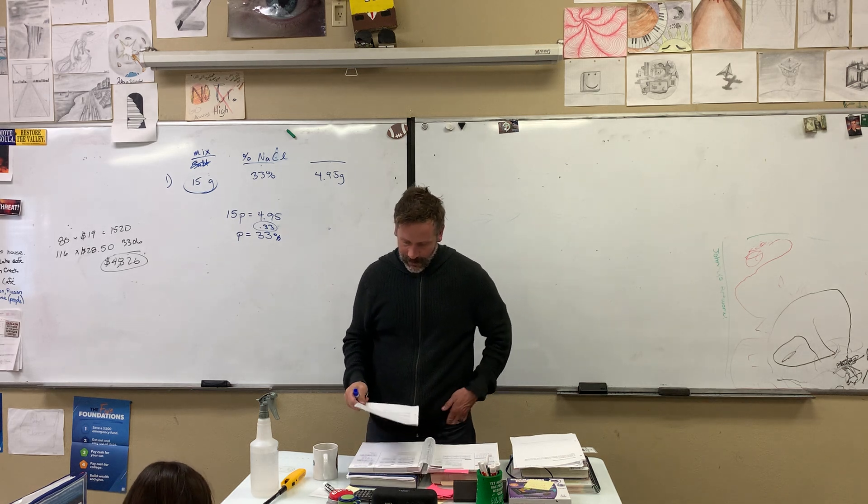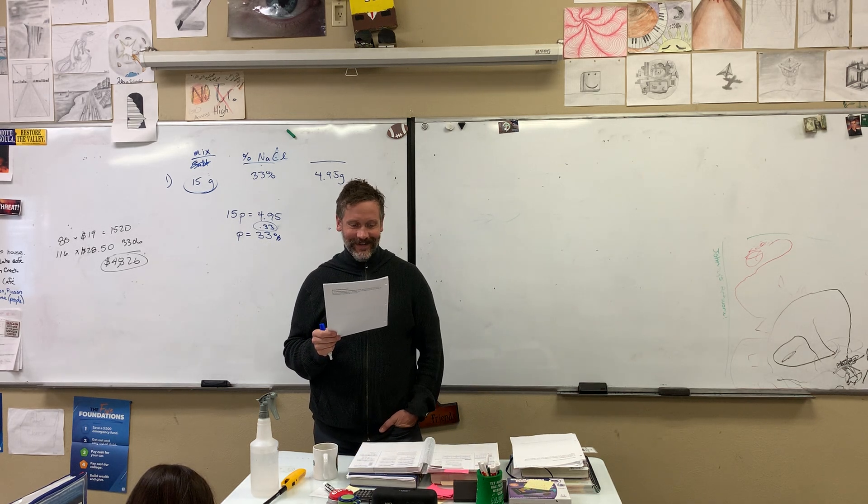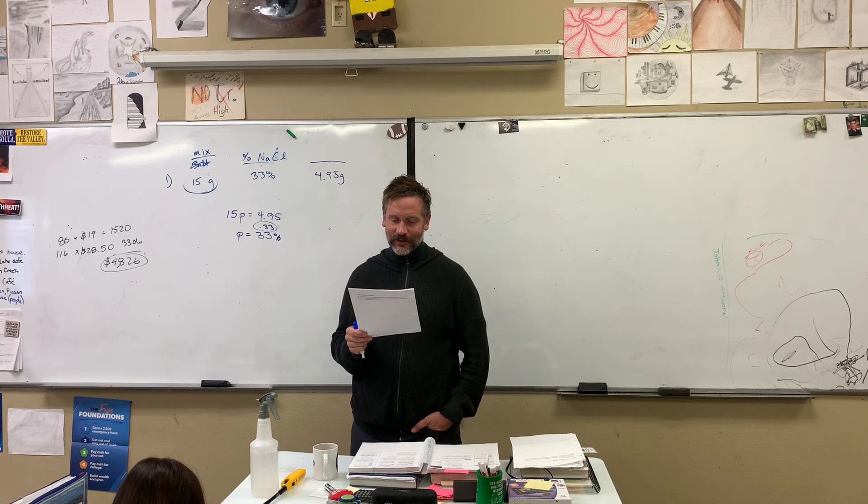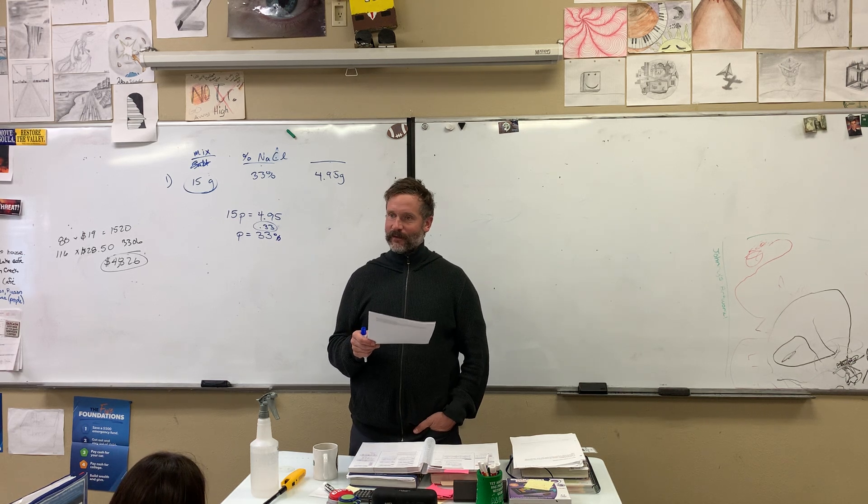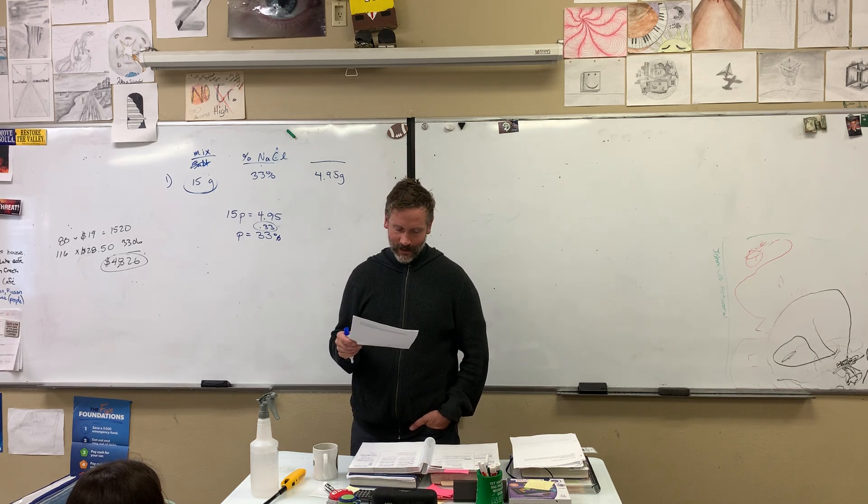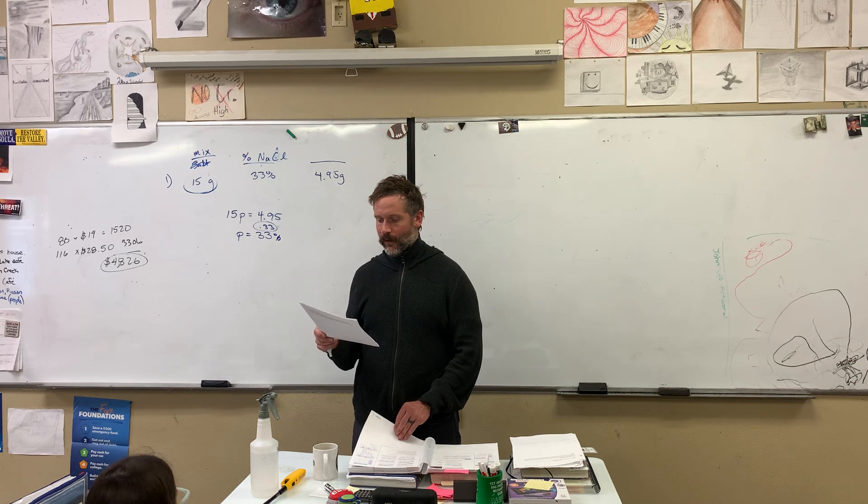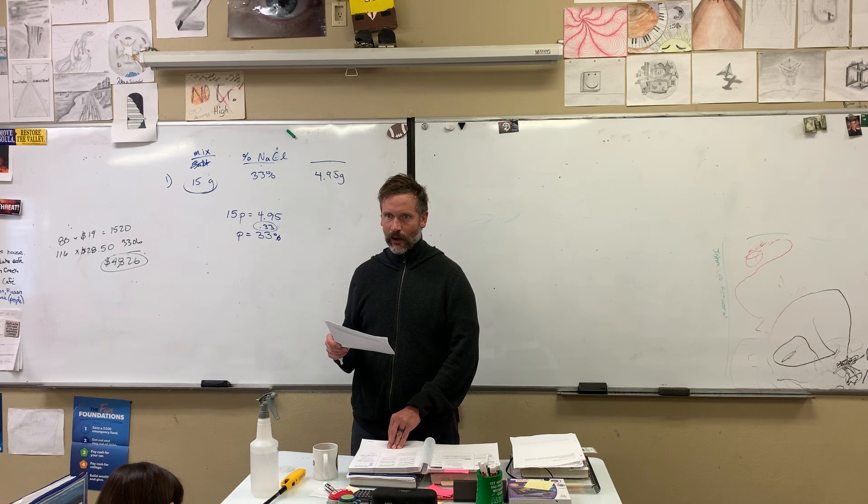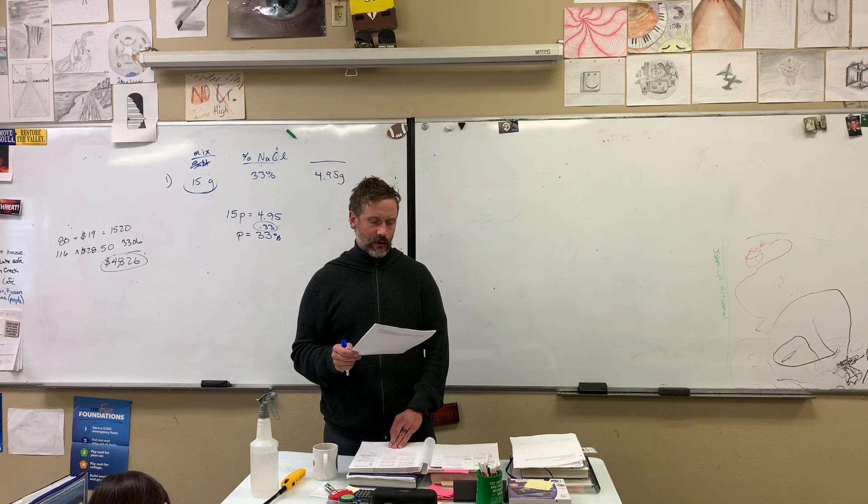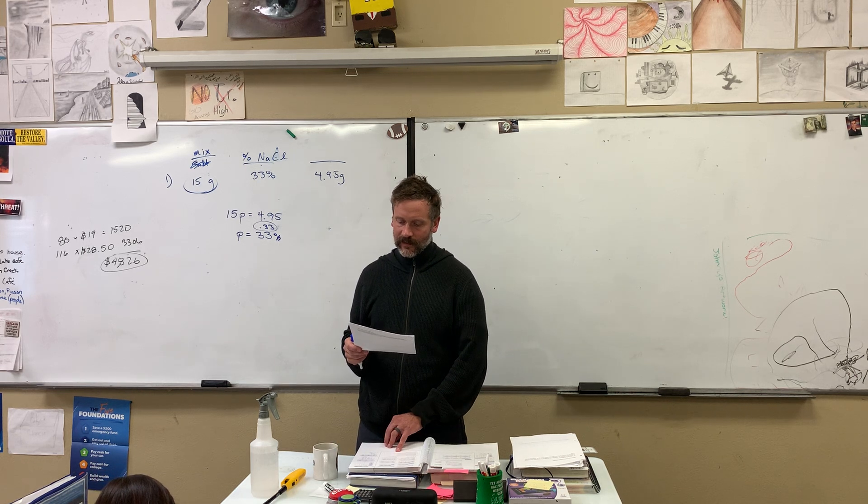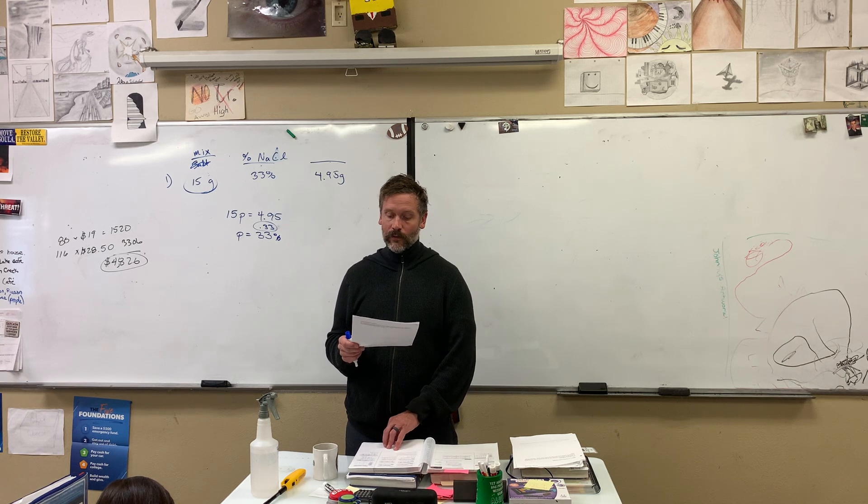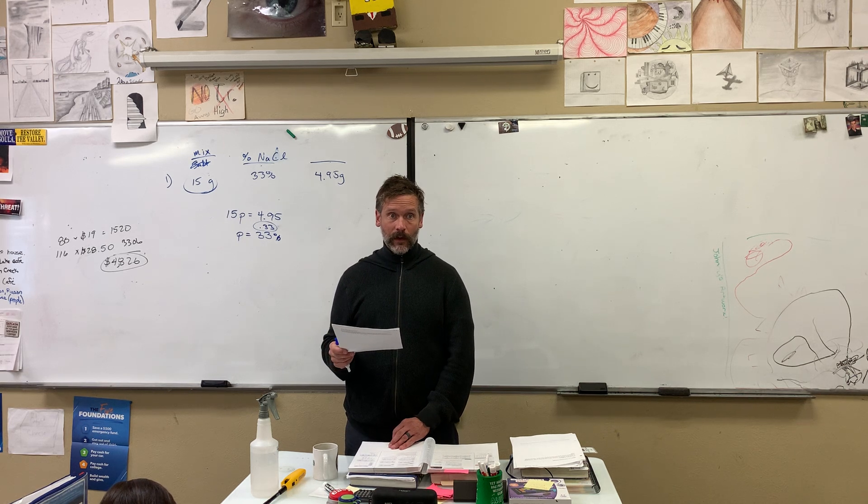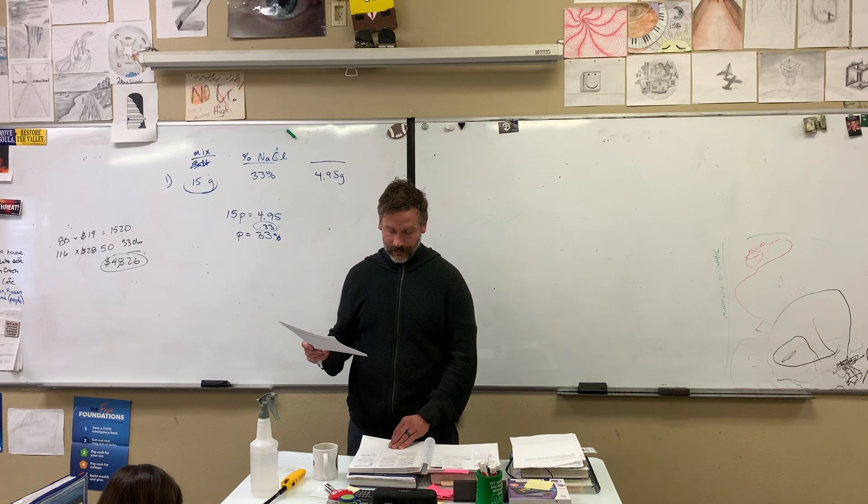Take a look at number two. Number two, I actually filled in the answers for you. The amount of mixture, the percent of ingredients, the amount of ingredient is you just take the percentage times the amount of mixture, so 0.25 times X plus 80. There's nothing to do on number two. The chart's already filled in. You took your amount of mixture times your percent of ingredients, and that gives you your amount of ingredients. So you took 0.25 times X plus 80. We're not doing anything more with number two.